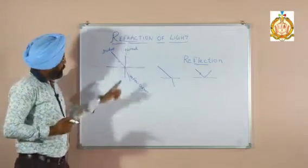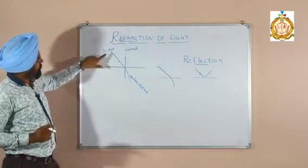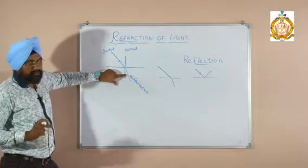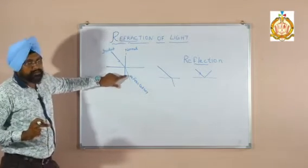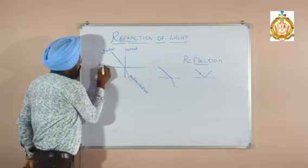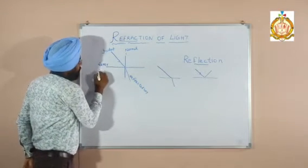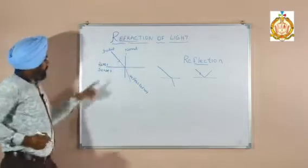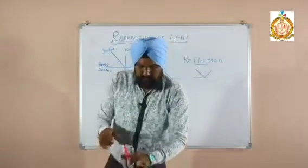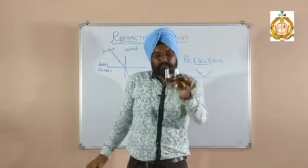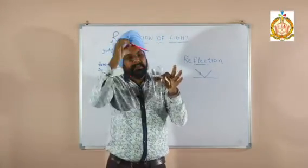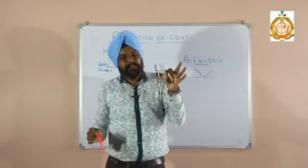Two cases are there. The first law of refraction is the ray comes and bends toward the normal. When it bends toward the normal, the speed decreases. This is the rarer medium and inside the water is the denser medium. I will explain with one experiment. This is the normal; this is the rarer medium, and inside the water is the denser medium.